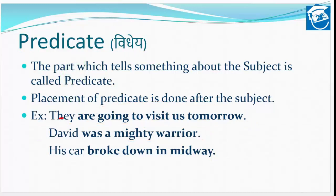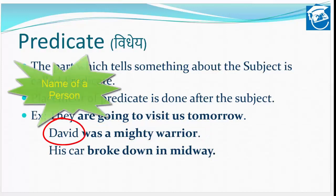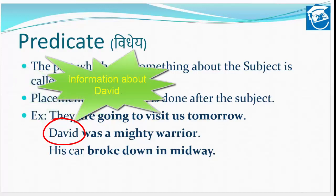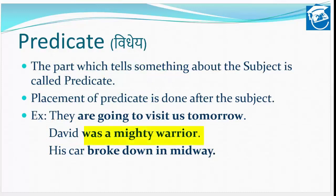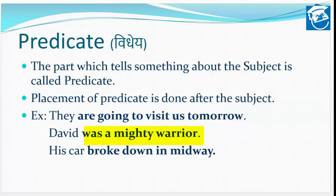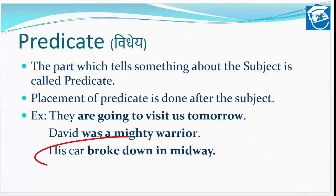Another example: David was a mighty warrior. David ek person ka naam hai — yeh humara subject hai. Uske baad mein us vyakti ke baare mein aur jaankari de rahe hain ki kaisa vyakti tha woh — he was a mighty warrior, bahut hi achha shoorveer yodha tha woh. That is the reason 'was a mighty warrior' itna bhaag humara vidhey ho jata hai, jo English mein predicate hota hai.